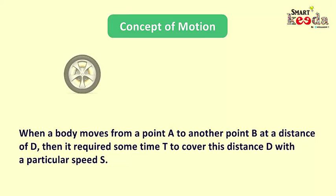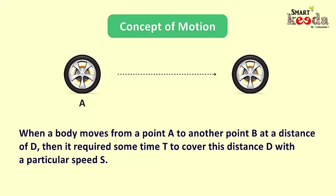Friends, when a body, let's say a wheel like this one, is at a point A and it moves to another point B at a distance of D, then it requires some time T to cover this distance D with a particular speed, let's say S.